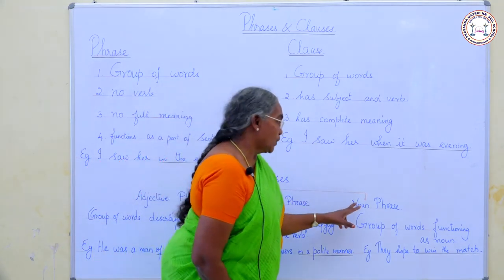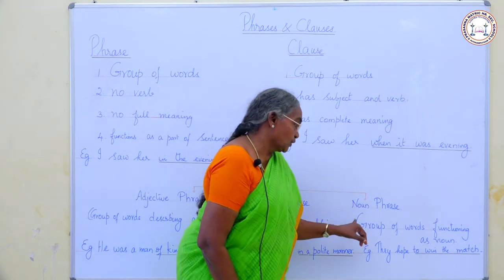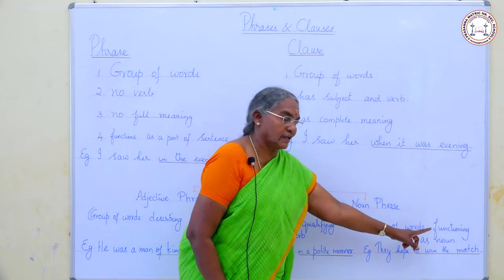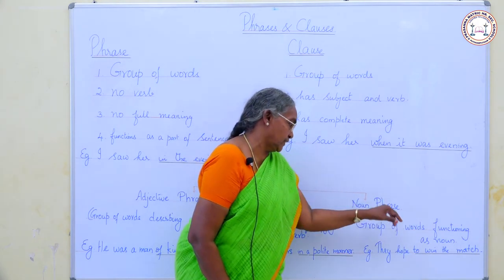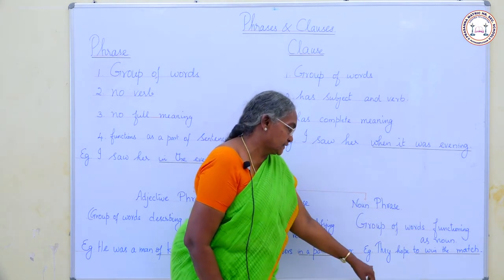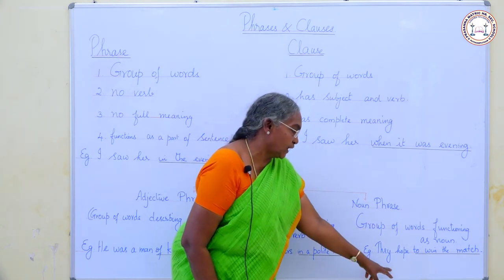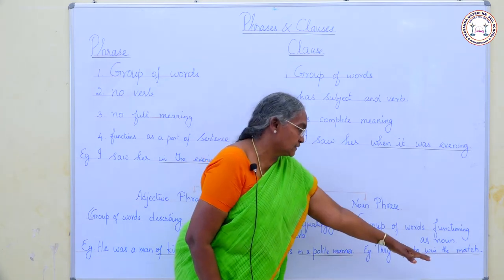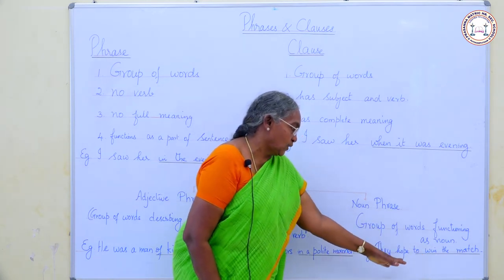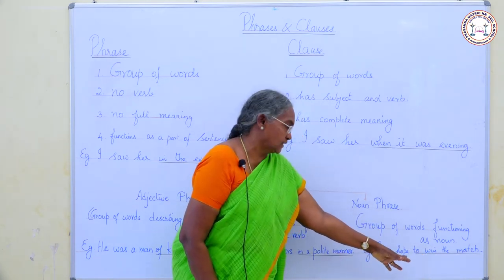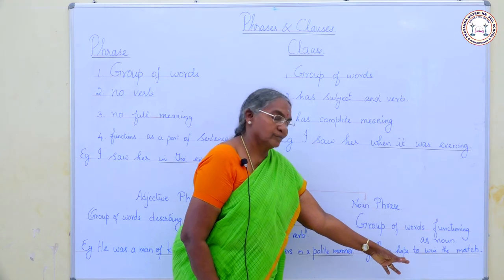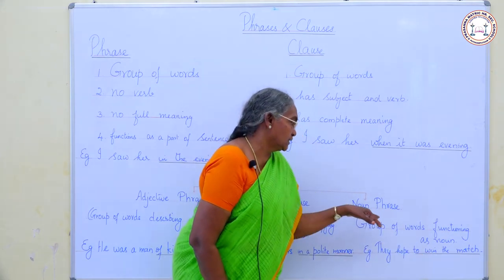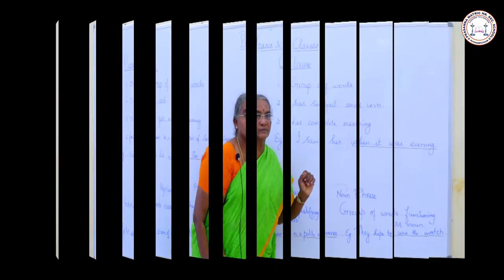Next, noun phrase. A group of words functioning as a noun is called a noun phrase. Example: 'They hope to win the match.' 'To win the match' is the object of the verb 'hope.' So, 'to win the match' is the noun phrase.